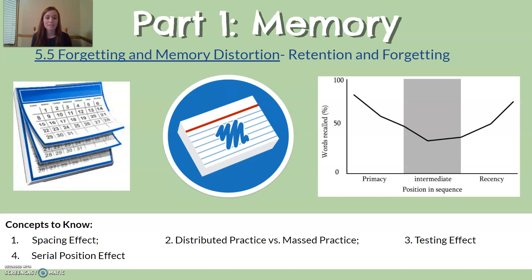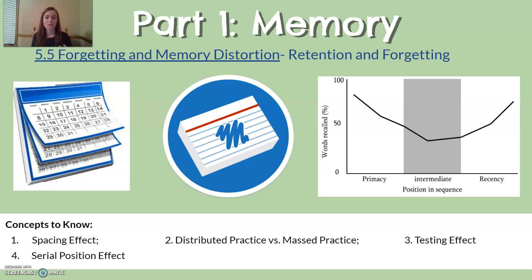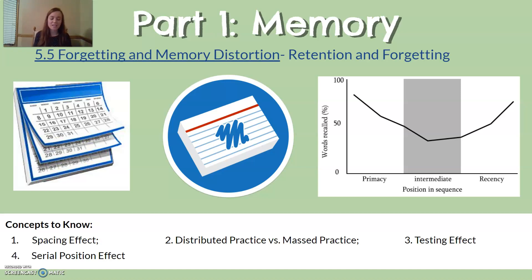The serial position effect is the phenomenon that when you are trying to remember a list of things, you are likely to remember the items at the beginning and the end of the list, but forget the things in the middle. For example, if someone asks you to get bread, milk, eggs, butter, flour, cinnamon, and sugar, you'll likely remember the first and last couple of items but forget the middle ones. The primacy effect refers to remembering things at the beginning; recency refers to remembering things at the end.